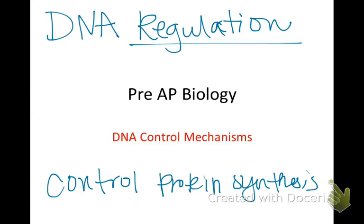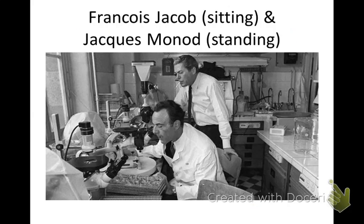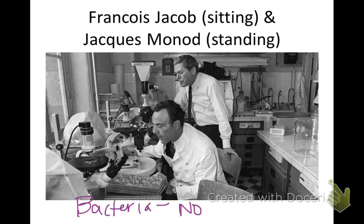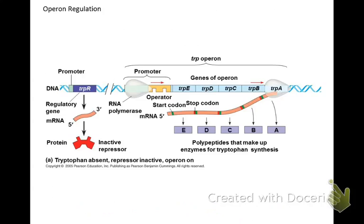The first thing we're going to look at is an operon. Jacob and Monod discovered this in 1961. This is only in bacteria — prokaryotes. A prokaryote is a bacteria, a cell with no organelles. Prokaryotes have operons, and an operon is a start and a stop for protein synthesis.